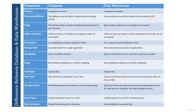The third parameter is usage. The database helps to perform fundamental operations for your business, while data warehouse allows you to analyze your business data. For example, daily bank transactions like cash deposits and withdrawals are stored on an immediate basis. Once transactions are recorded over five to ten years, that data is used for analysis and reporting in the data warehouse to take further decisions.